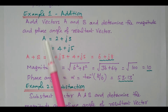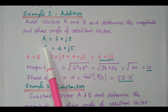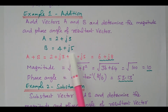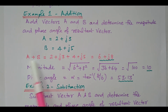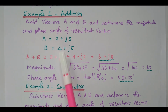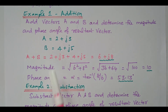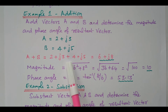First we will see example one for addition. For addition and subtraction, we can use the rectangular form. Here two vectors are available: A equal to 2 plus J3, B equal to 4 plus J5. The question is we need to add both the vectors. It is already in the rectangular form.